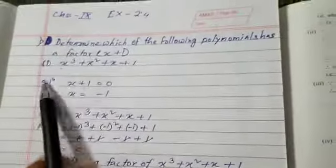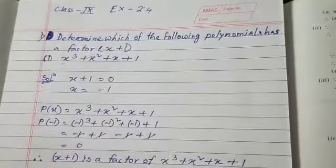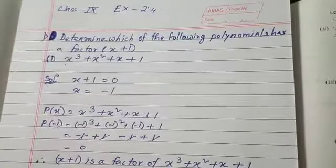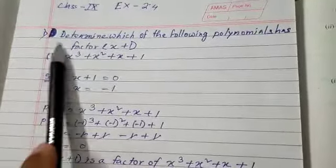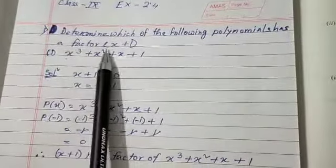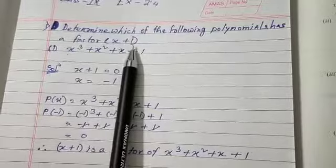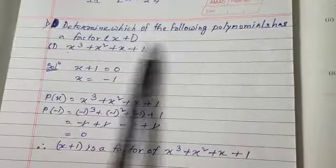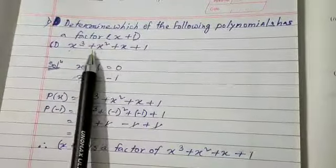Hello students, I am going to explain Class 9 Exercise 2.4, problem number 1. The question is: Determine which of the following polynomials has a factor (x+1).